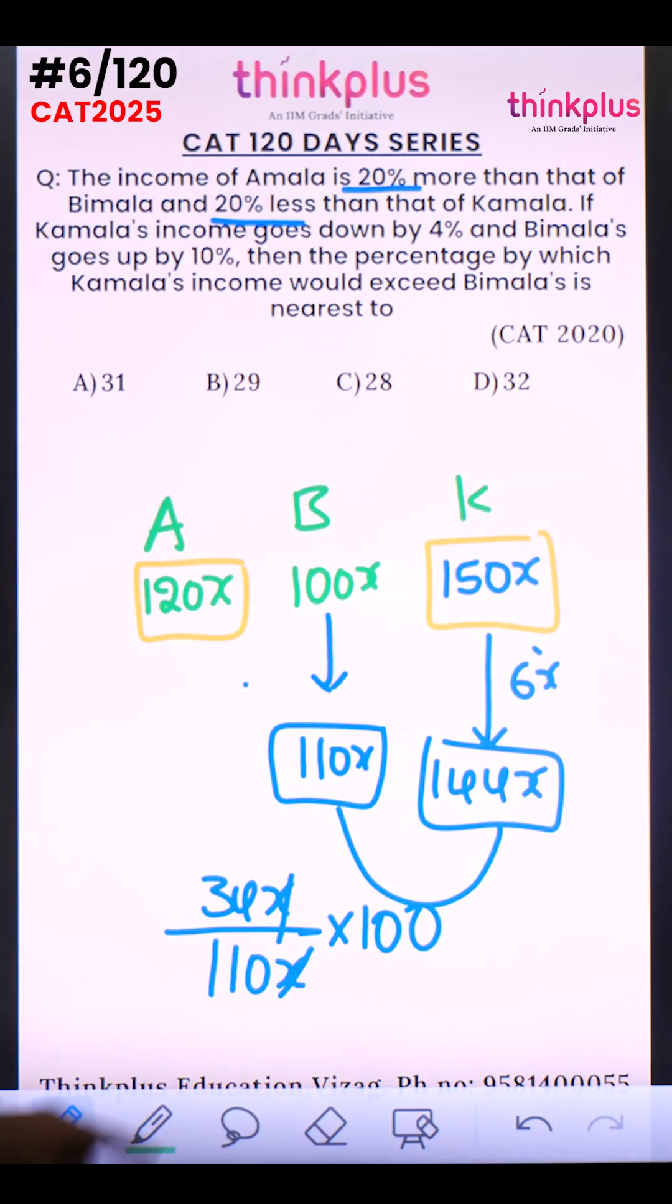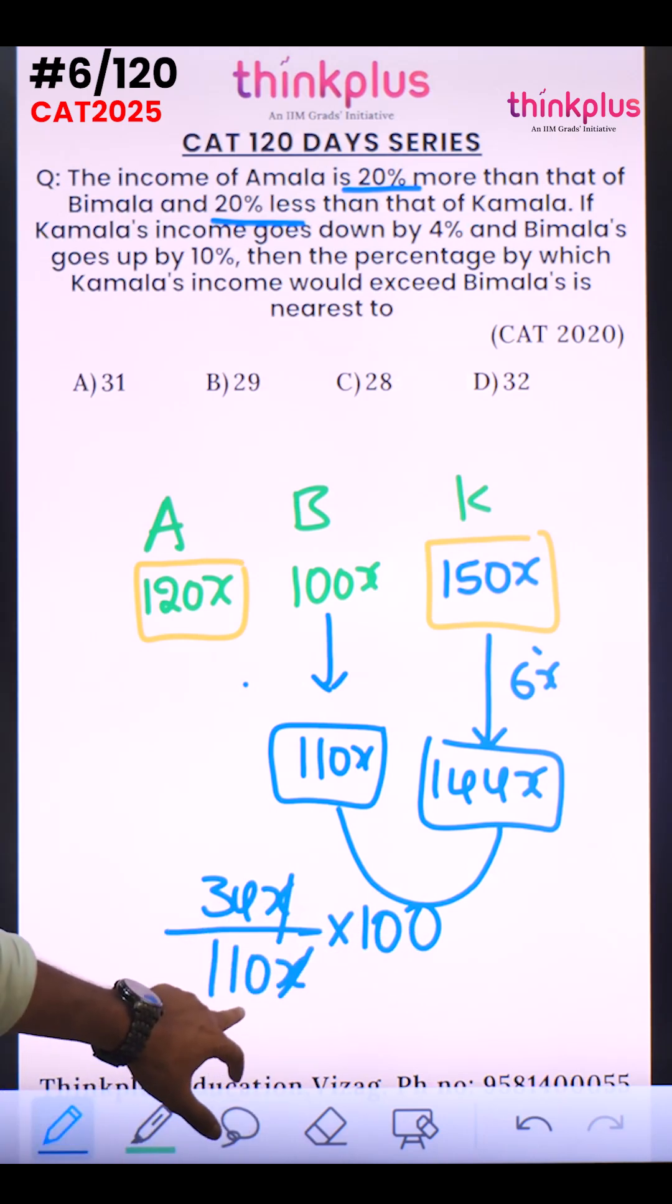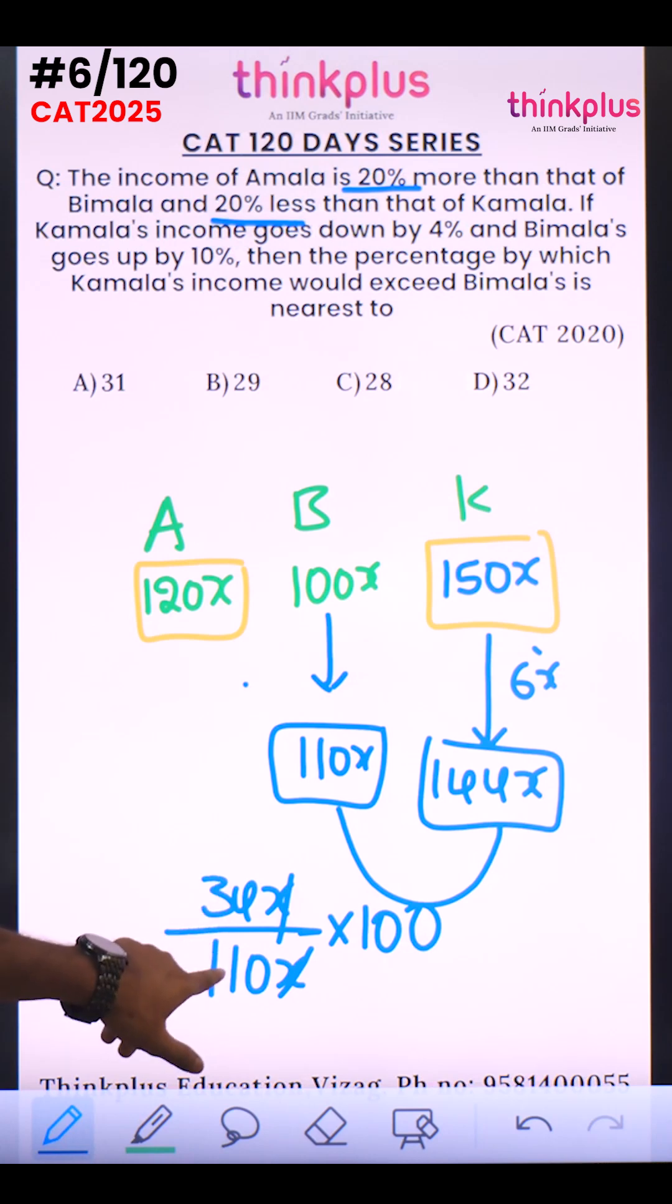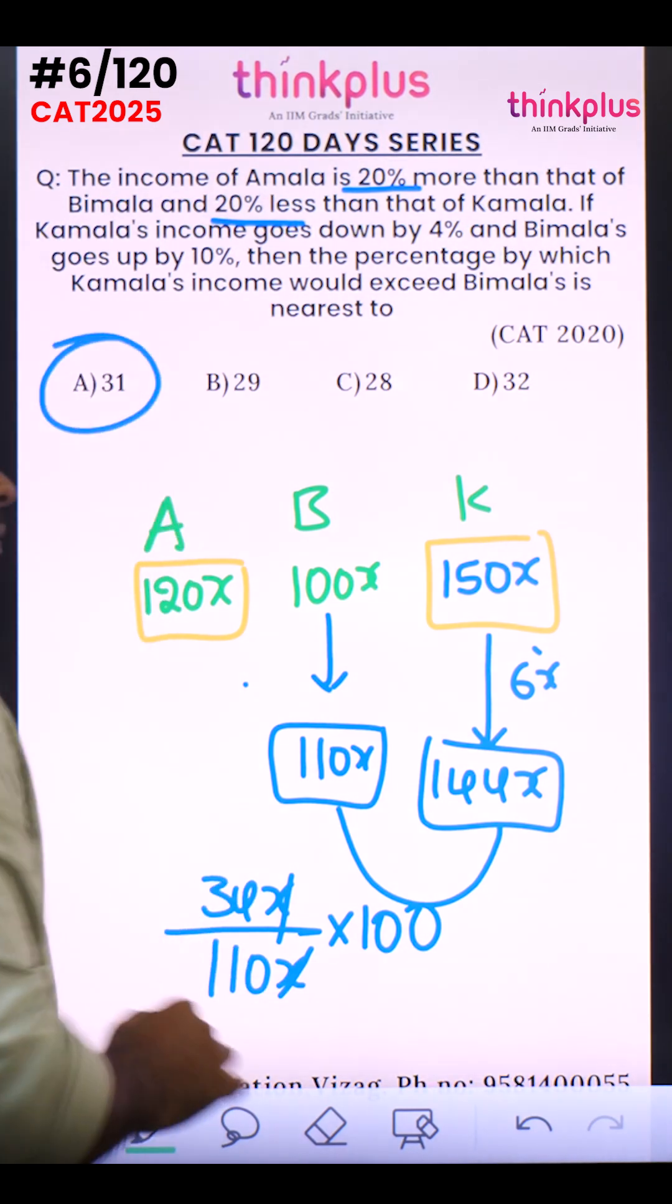So guys, you can calculate this value fully, otherwise take 10 percentage. 10% is 11. 3 elevens are 33. Approximately 30 percentage is there and extra 1 is there, approximately 31 percentage. Answer is A for Apple.